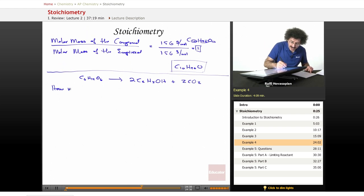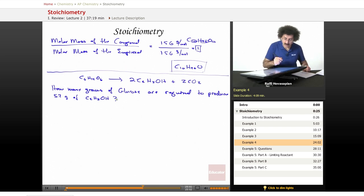The question is, how many grams of glucose are required to produce 5.2 grams of ethanol, C2H5OH? So how many grams of glucose do I need in order to produce 5.2 grams of C2H5OH?